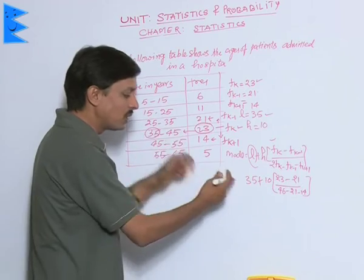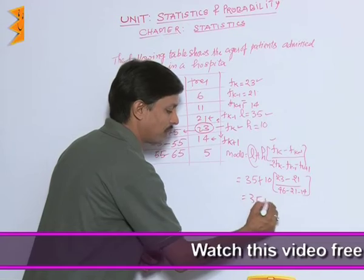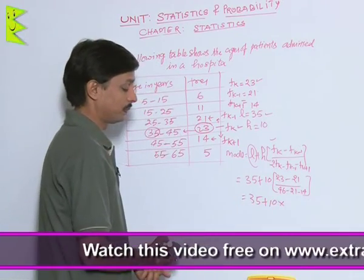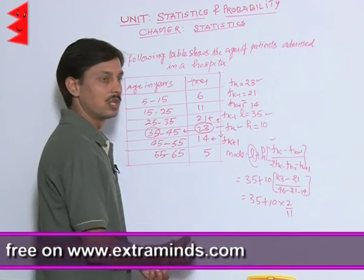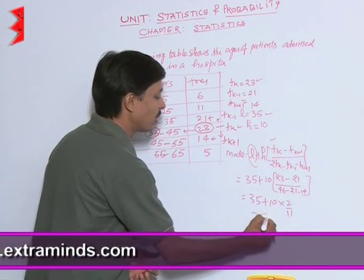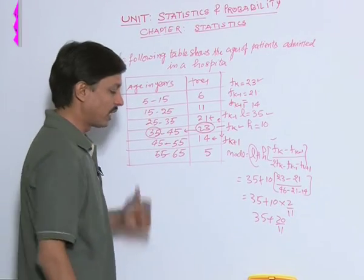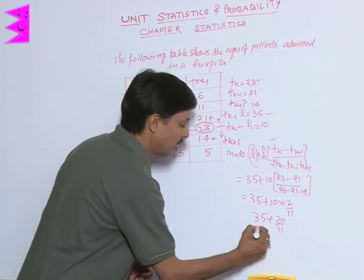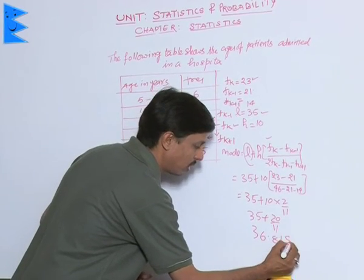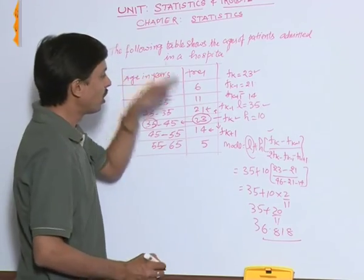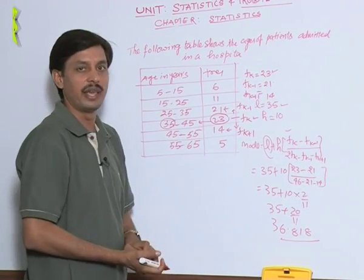Simplifying this, we get 35 plus 10 times 2 upon 11, which gives 35 plus 20 upon 11, and the final answer is approximately 36.818. So the mode of a class interval and frequency distribution can be calculated like this.